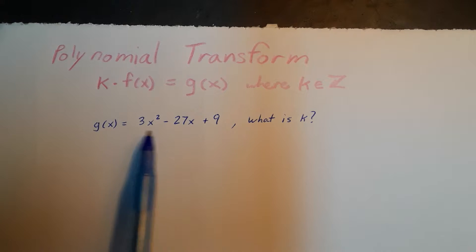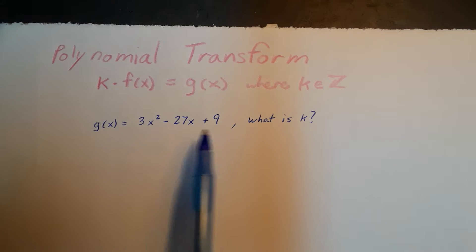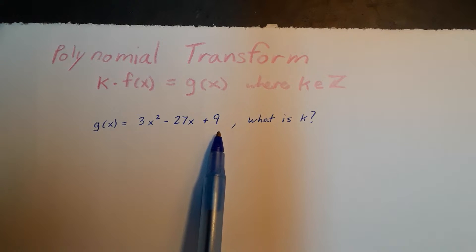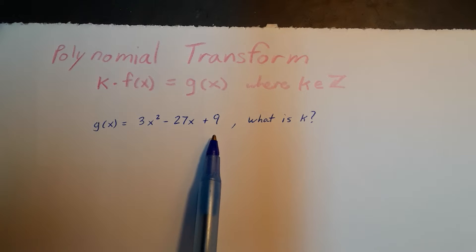If we look at the coefficients, we have 3, negative 27, and 9. There is a common factor of 3 in each of these, and that is the greatest common factor in each of these terms within our polynomial, so we will factor a 3 out of this.